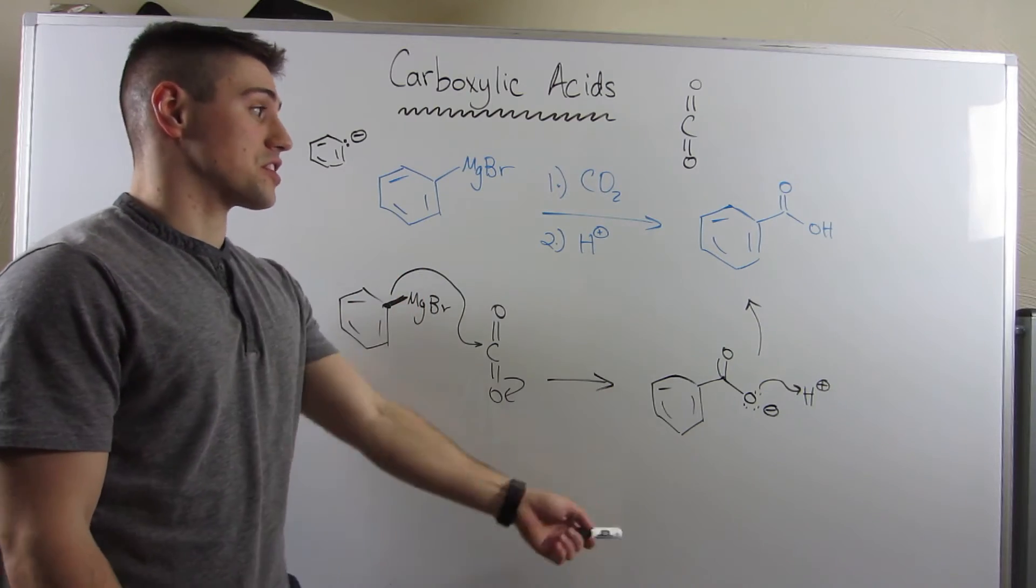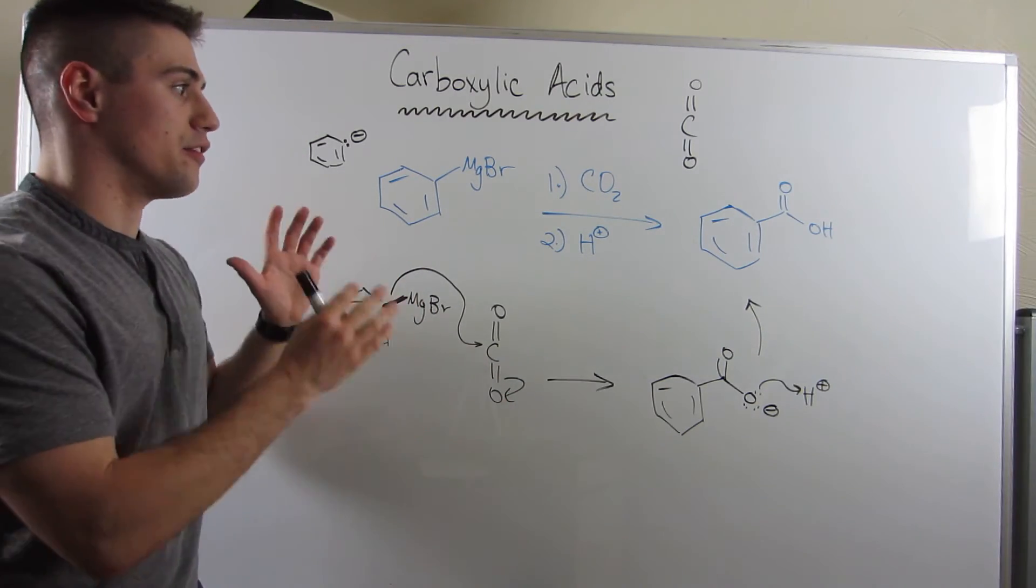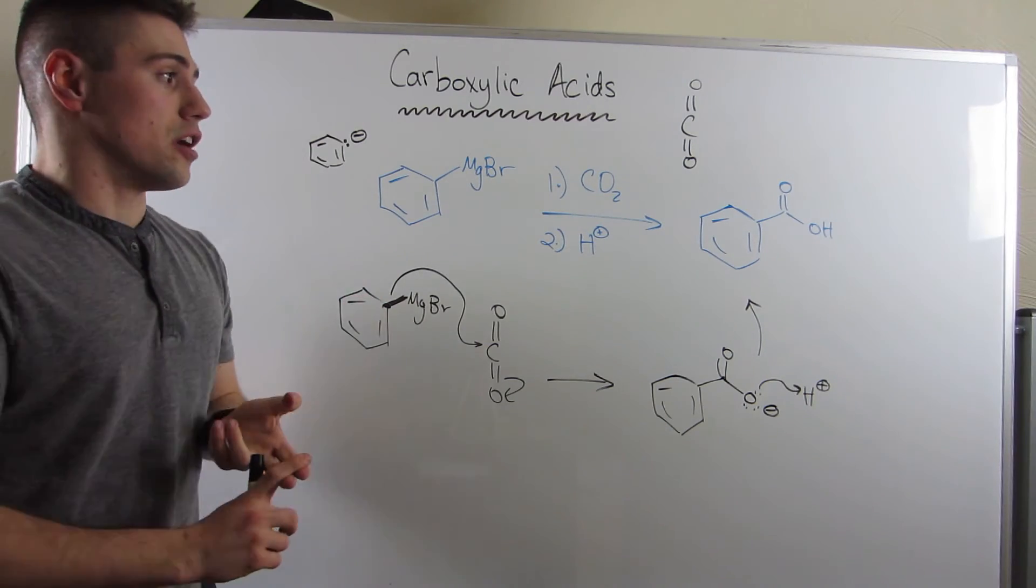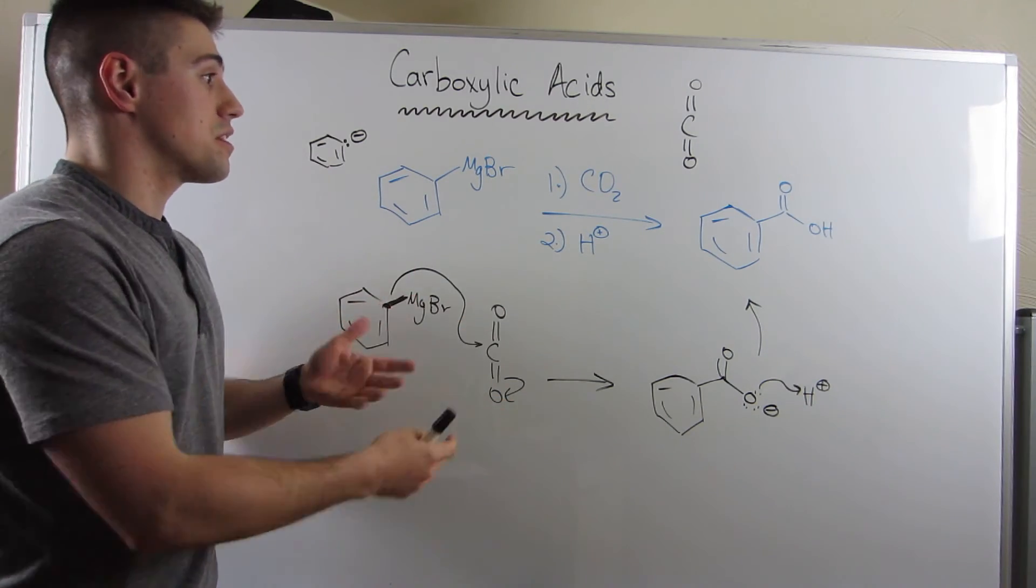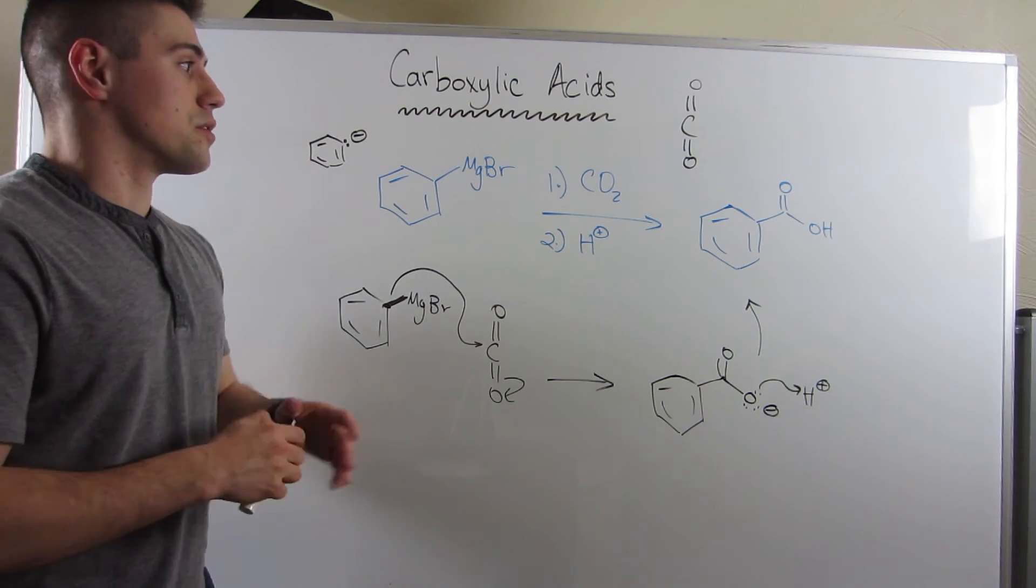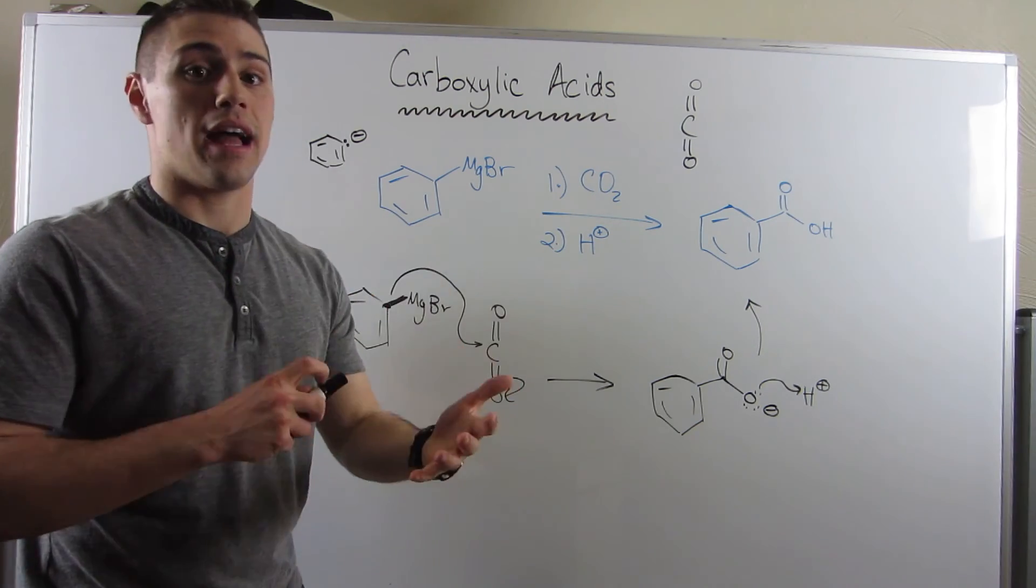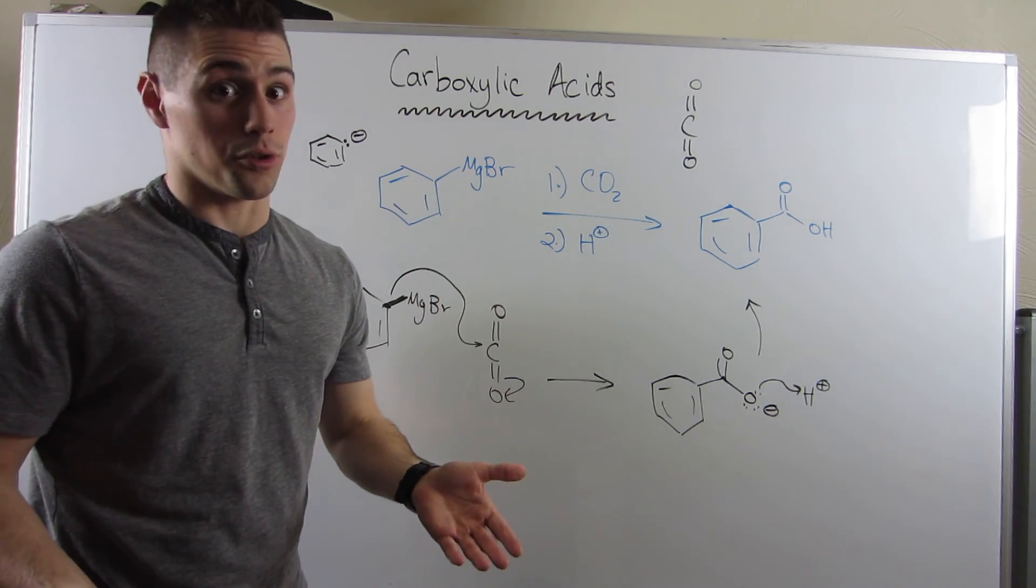So I really think this is old hat. There are some problems on the worksheet where I have you draw the mechanism and predict the product. So make sure you're comfortable with this, but I think you'll be a pro at this already. This is one way to make a carboxylic acid, but now I want to show you how to do a similar reaction with a nitrile functional group.